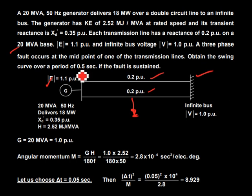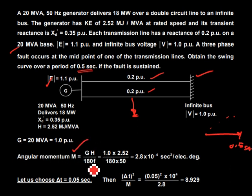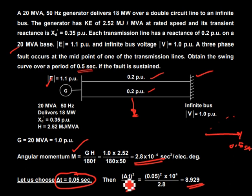We need to obtain the swing curve over a period of 0.5 seconds from the occurrence of the fault using the step-by-step method. First, M = GH/(180·f) is calculated, giving a specific value. We assume delta-t = 0.05 seconds. The constant delta-t²/M is calculated as 8.929, which is required for our calculations — only Pa varies while this remains fixed.